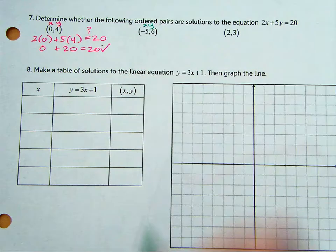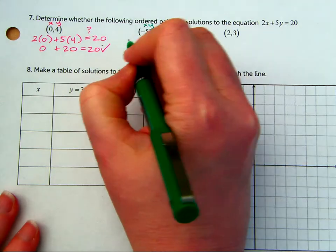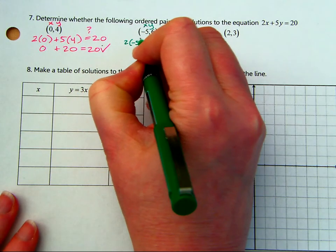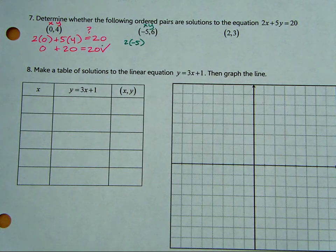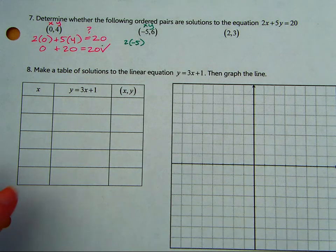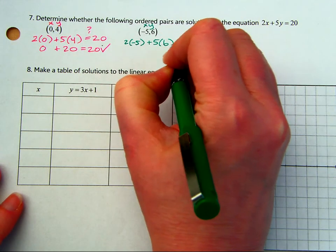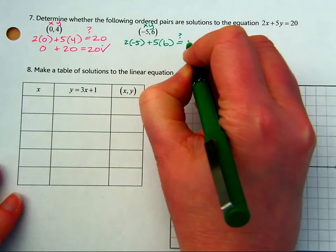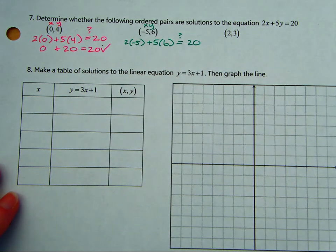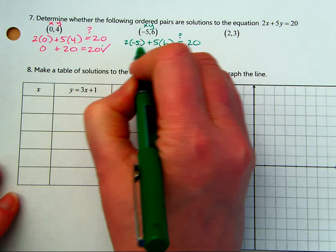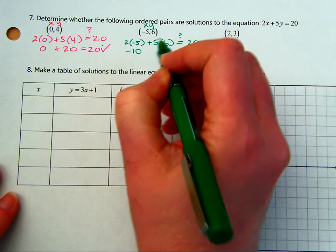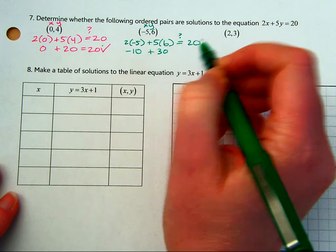Label the 2x and y if that helps. 2 times negative 5. This is why I'm using the parentheses for the negative, because I don't want it to look like 2 minus 5 accidentally. 2 times negative 5 plus 5 times 6. Is that equal to 20? Let's see. This would be negative 10 plus 30.